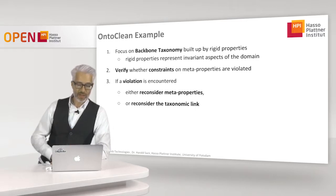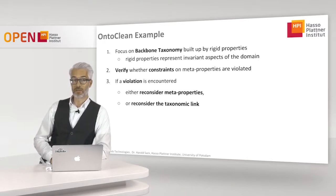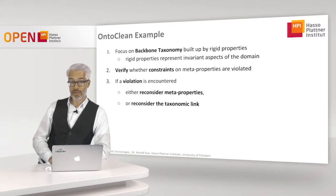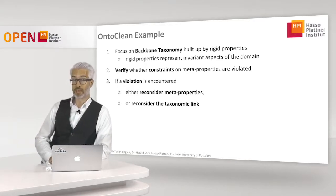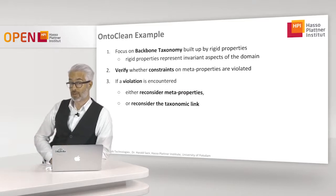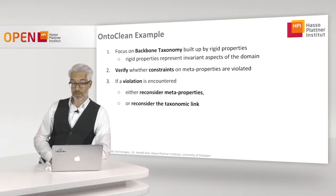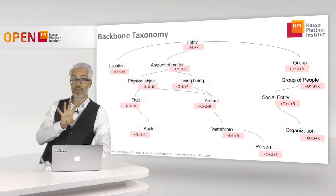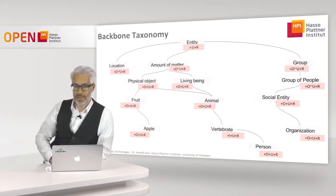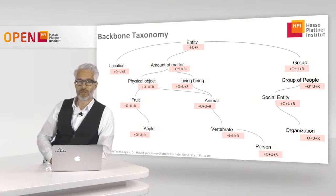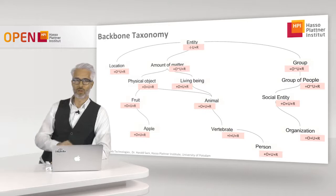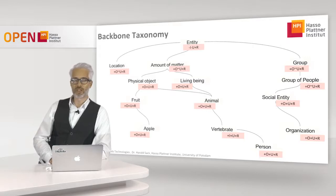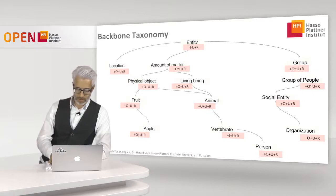Rigid properties don't change over time for a specific entity or individual, so they represent an invariant aspect of the domain. Starting from the backbone taxonomy, we verify whether the constraints on the meta-properties are violated. Every time a violation is encountered, we must reconsider either the meta-property assignment or the taxonomic link that was made.